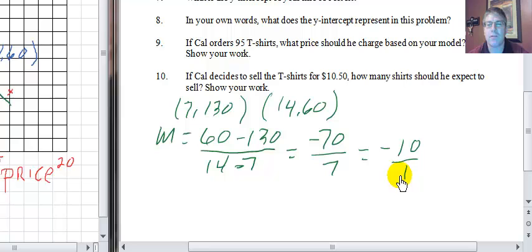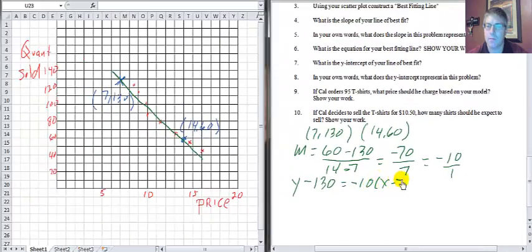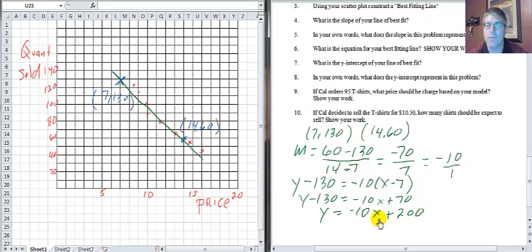I couldn't ask for much better numbers. Negative 10 over 1, what does that mean? That means for every dollar increase in price, we sell 10 fewer shirts. Now we plug that into point slope form and find the equation of our line. y minus 130 equals negative 10 times x minus 7. y minus 130 equals negative 10x plus 70. And we get y equals negative 10x plus 200. So f of x equals negative 10x plus 200.